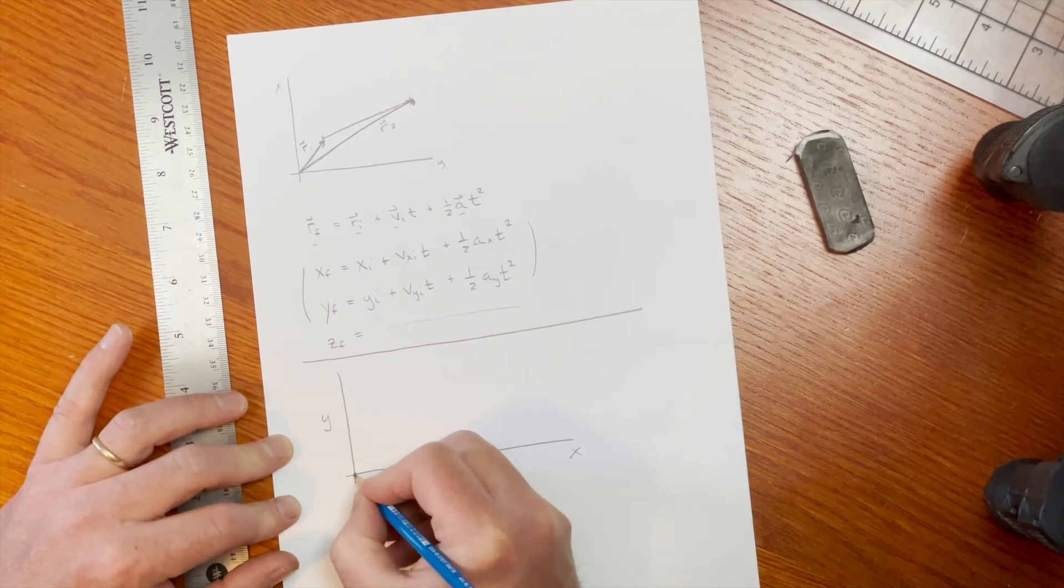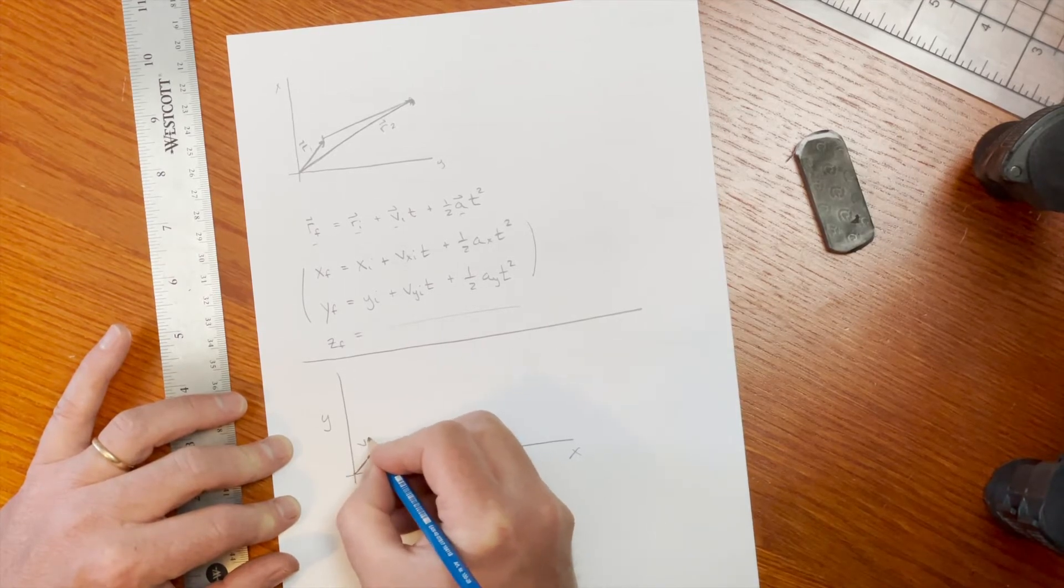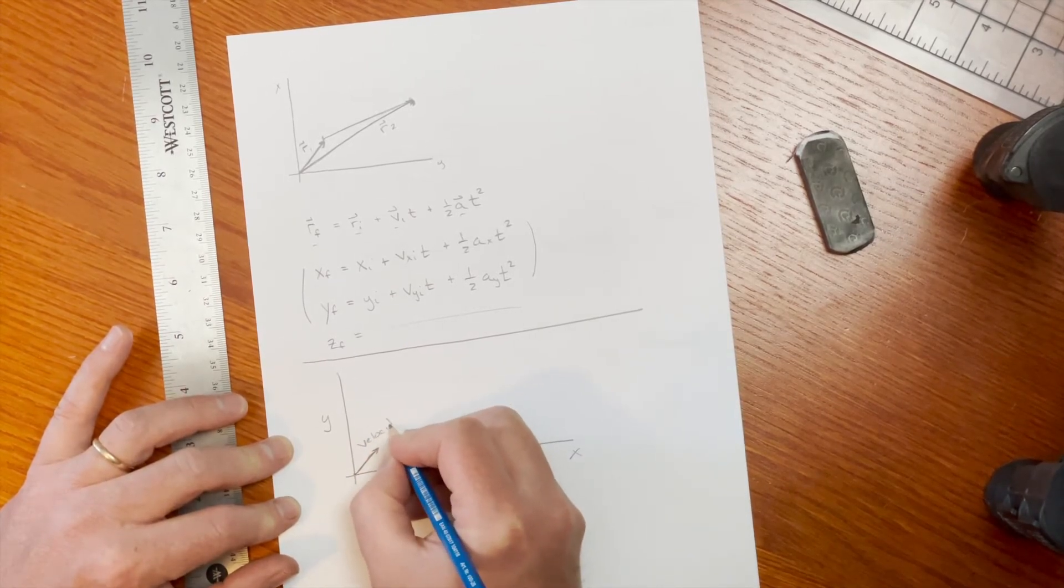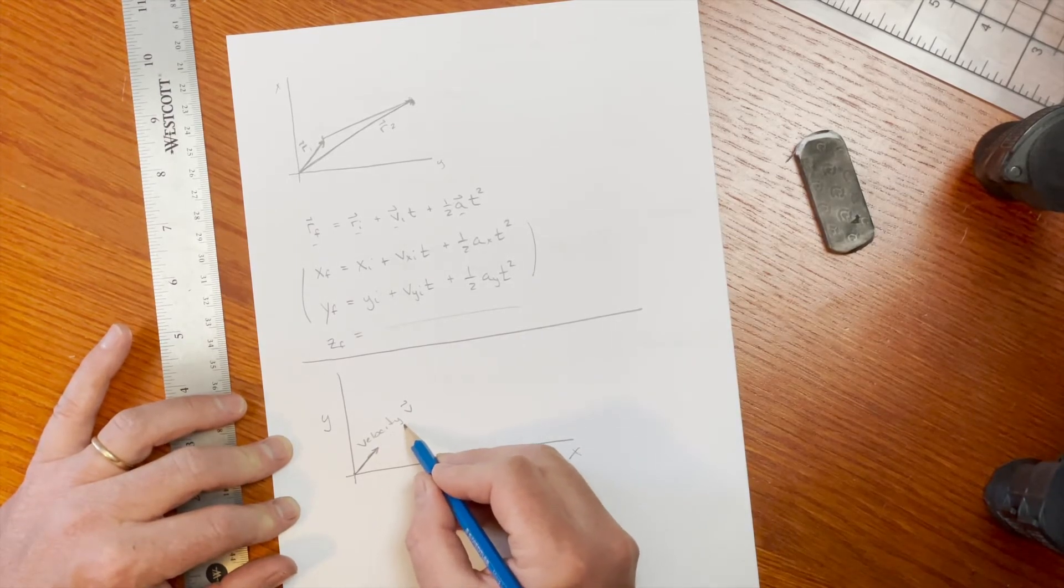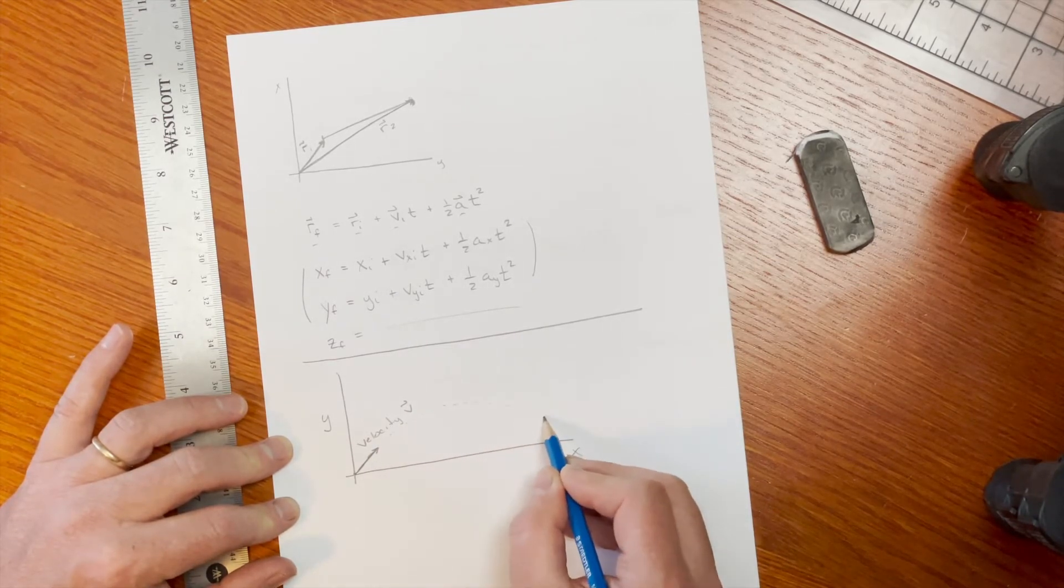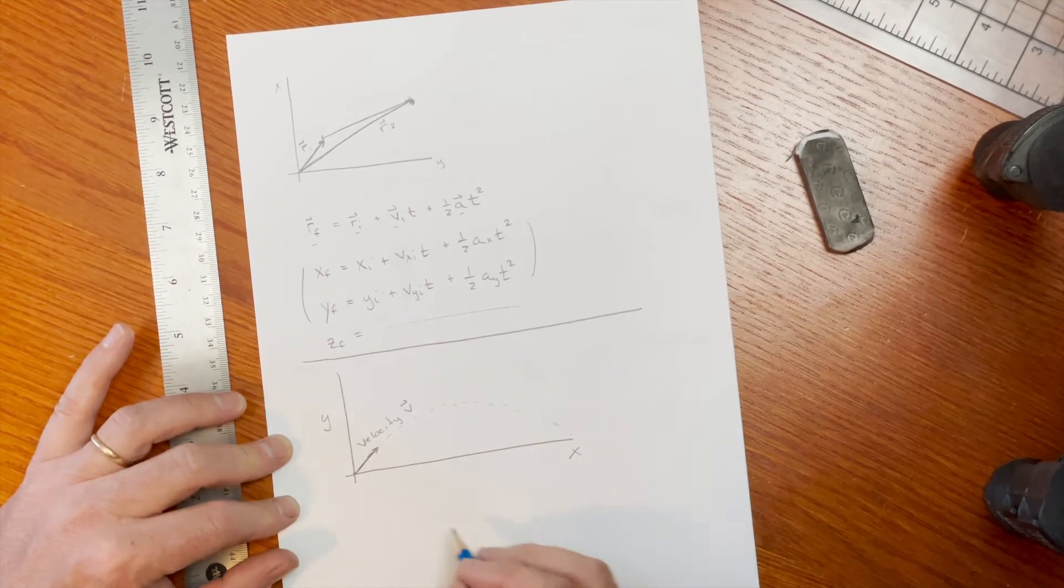If I start in an initial position and I throw the ball, throw the object with an initial velocity, call that vector v, then it's going to go like that, make some kind of arc, ignoring air resistance.